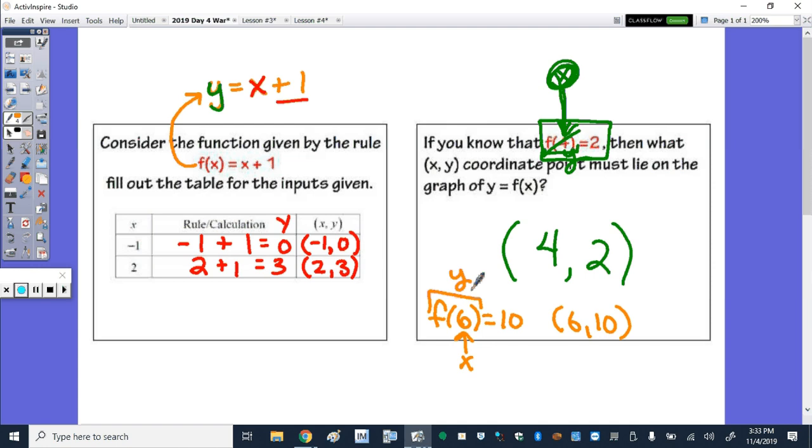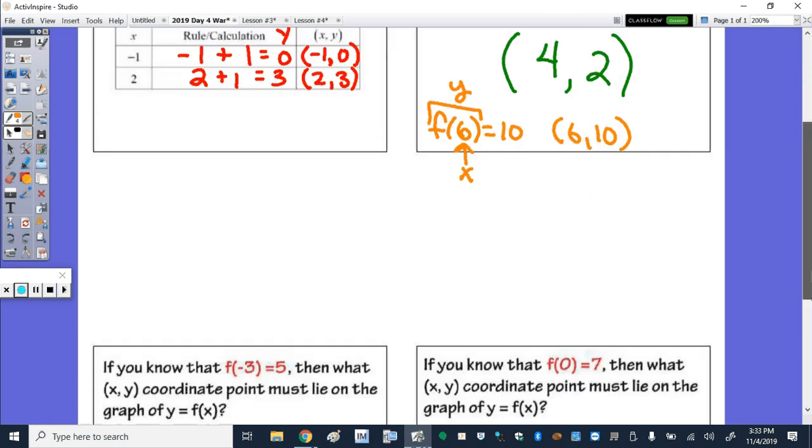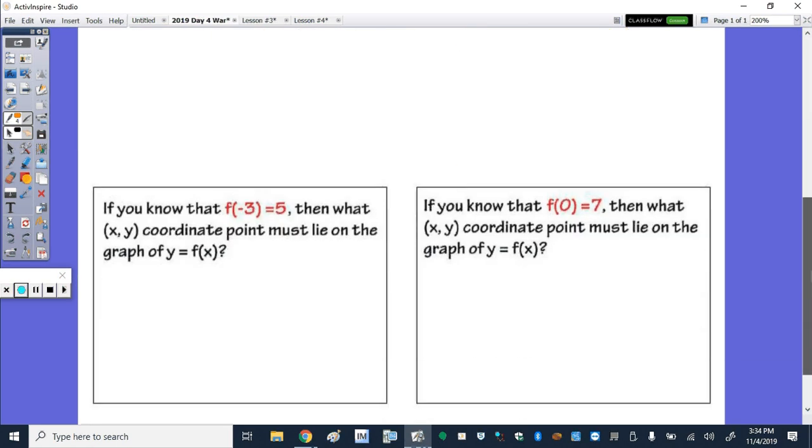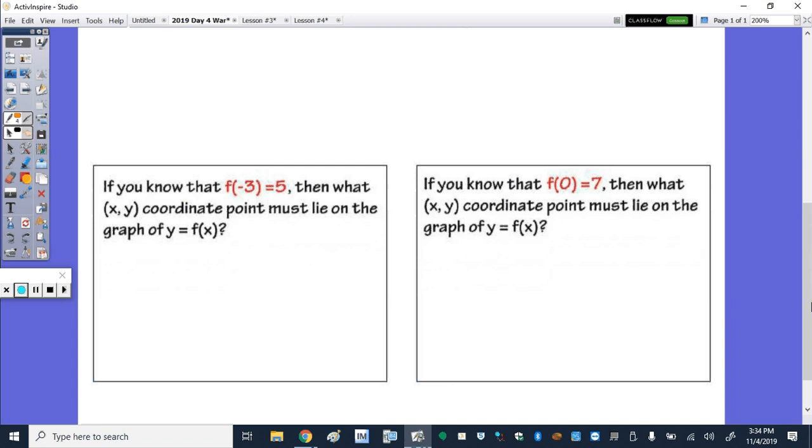Alright, bottom left hand corner. If you know that f(negative three) equals five, oh I didn't realize there was more than one example. There's two more, sorry about that guys. So if f(negative three) equals five, then what's the point? Again, that would be the point negative three, five. And then if f(0) is seven, then that's the point zero, seven. Okay, and there's your warm-up.